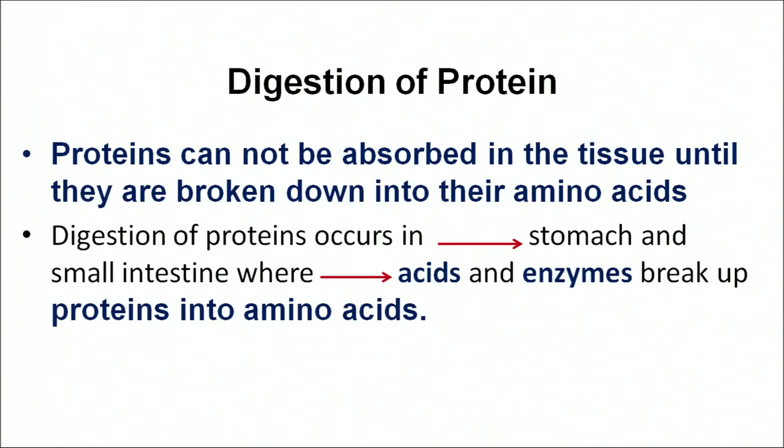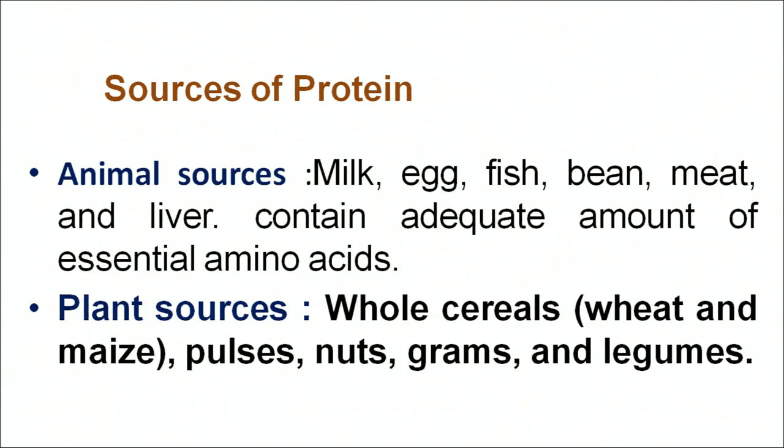Digestion of protein: proteins are not simply absorbed into our tissues — they undergo certain processes and are completely converted into amino acids. Sources of protein: there are two sources. Animal sources include milk, meat, egg, and poultry. Plant sources include whole cereal grains, pulses, legumes, and nuts.